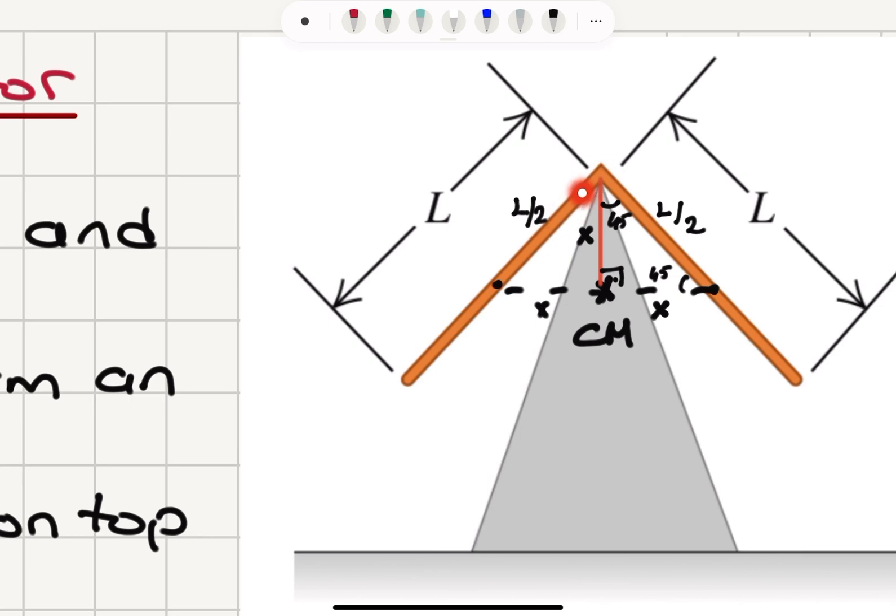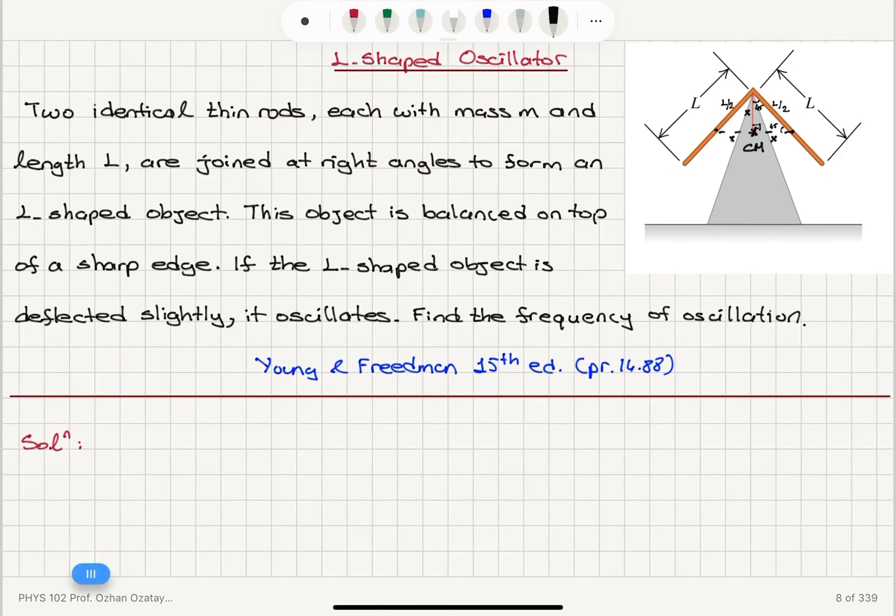So the hypotenuse of this right triangle will be L over 2. First of all, we note that this is again a physical pendulum.